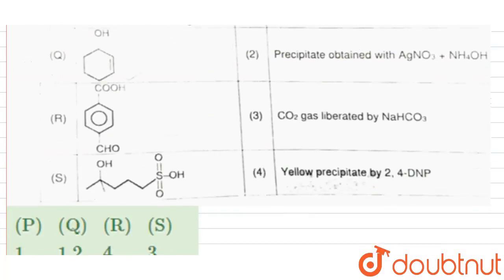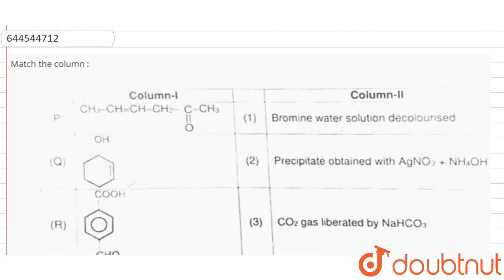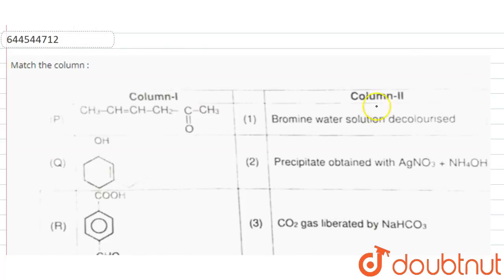Students, this is the question here. In column 2, some test results are given. Bromine water solution decolorized - this is a positive test for alkenes.